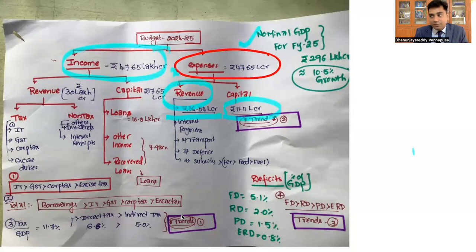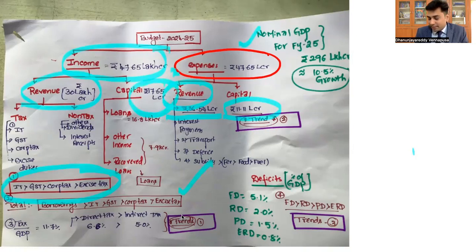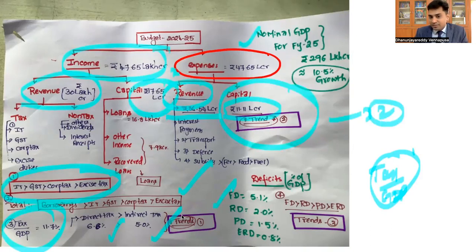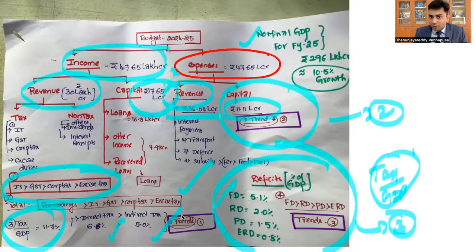To meet these expenses, you have revenue income of 30.7 lakh crores — with descending order of taxes — and capital income of 17.65 lakh crores. Direct taxes are more than indirect taxes for the government, and tax to GDP is 11.7%. In terms of trends: capital expenditure has been consistently increasing during the Prime Minister's time. The third trend to observe is deficits, which have been shown graphically. There is no consistency in tax to GDP, but one thing you find is direct taxes are more than indirect taxes.